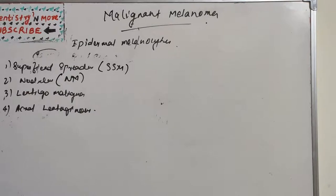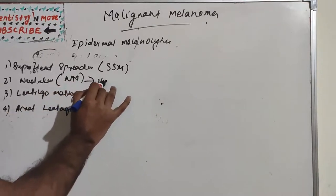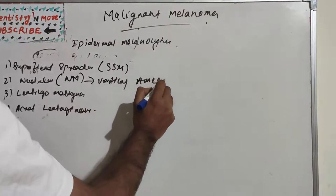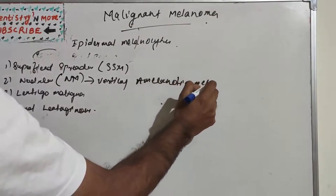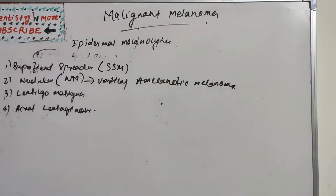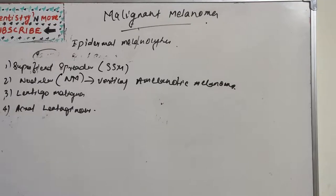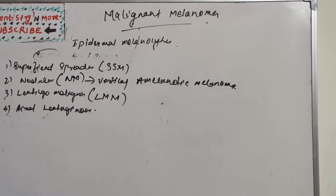Nodular melanoma (NM) has no clinically recognizable radial growth phase and exists solely in a vertical growth phase. It presents as a sharply delineated nodule with decreased pigmentation, appearing pink or black — this is known as amelanotic melanoma. It has a predilection for occurrence on the back and head and neck skin.